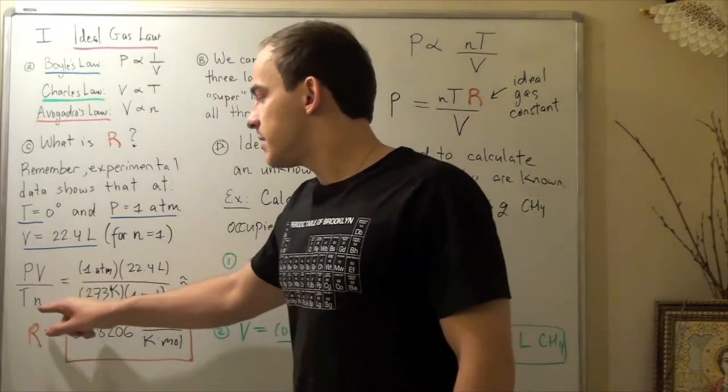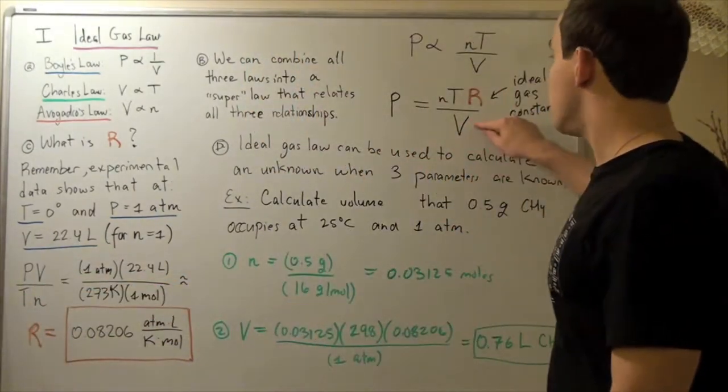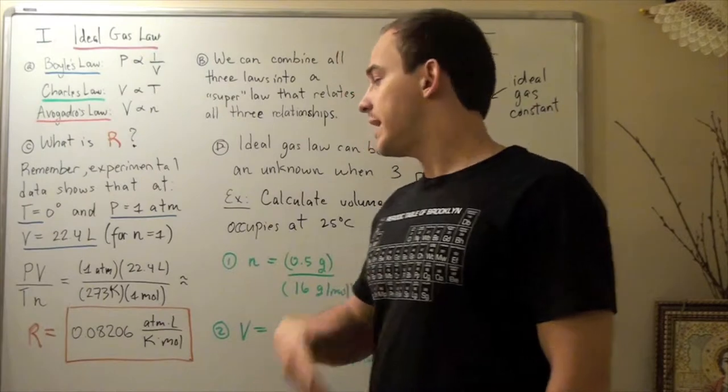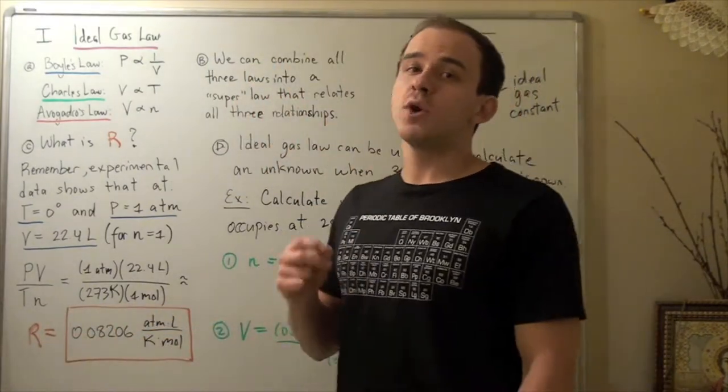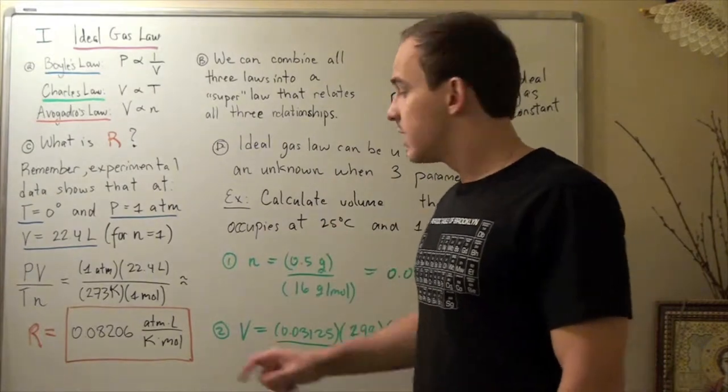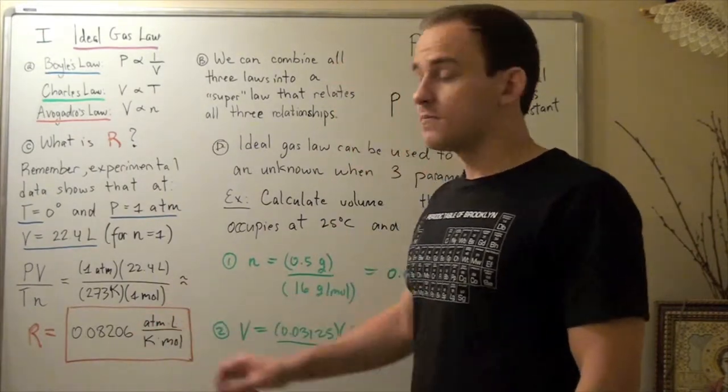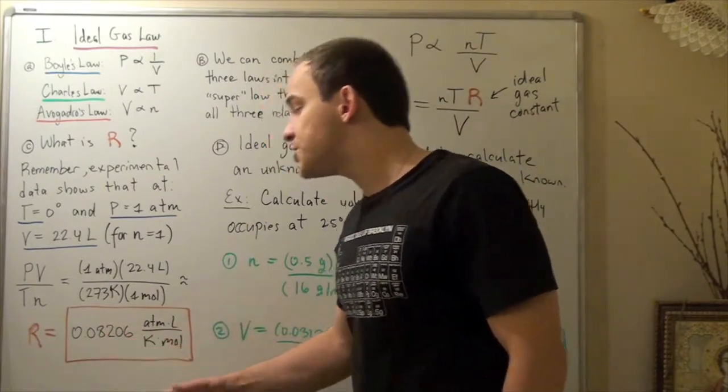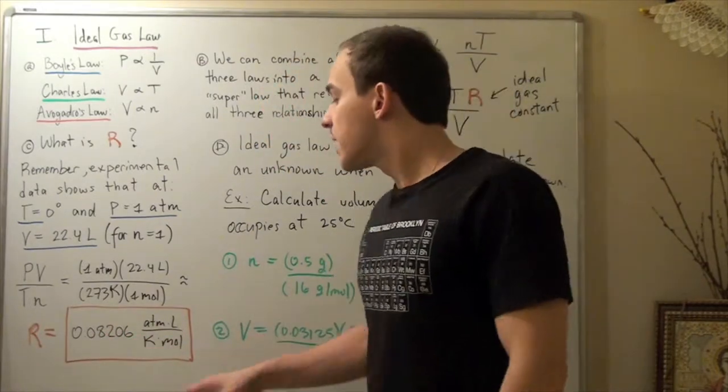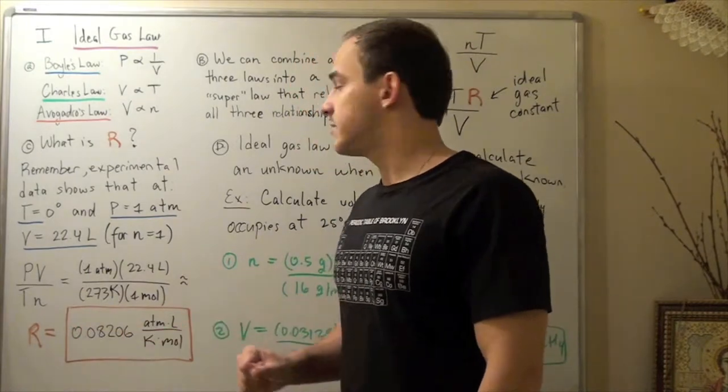So let's plug these in: P times V divided by T times n, simply rearrange these, plug our values in and we get our gas constant R is equal to 0.08206 atmospheres times liter divided by Kelvin times mole. Now this number might change if we play around with the units, but for these units, this will be our gas constant.